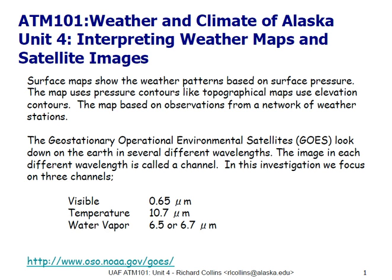Going back to the Wien displacement law, 10.7 microns is the peak wavelength we expect for emission at terrestrial temperatures — nearly 15 times longer than the visible wavelength of 0.65 microns. We also use the water vapor channel at 6.5 or 6.7 micrometers to look at the structure of water vapor in the atmosphere. This wavelength is very precisely tied to strong emission of radiation by water vapor, relatively unique to it, and allows us to track water vapor. At any terrestrial temperature, water vapor will glow very brightly at this specific wavelength.